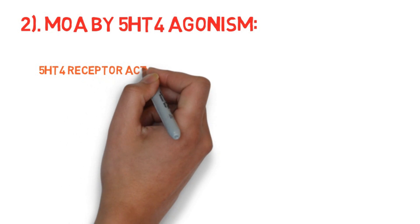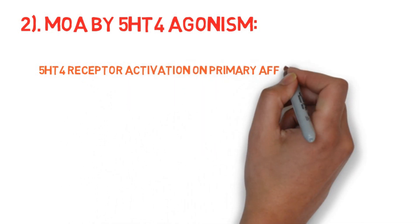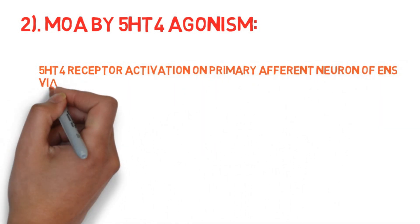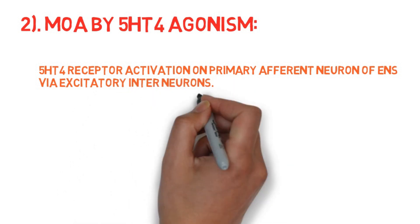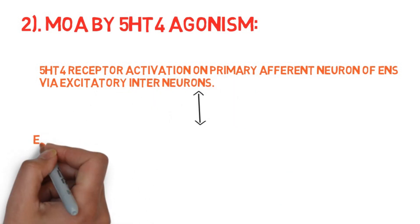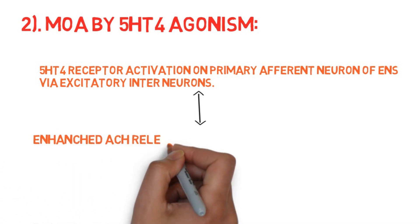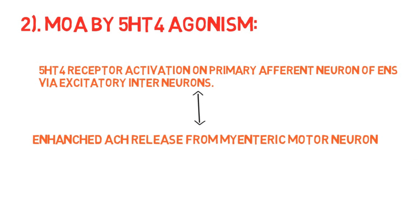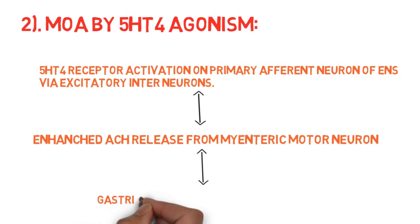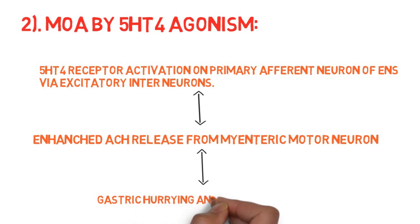Regarding 5-HT4 agonism: activation of 5-HT4 receptors on primary afferent neurons of the enteric nervous system via excitatory interneurons leads to enhanced acetylcholine release from myenteric motor neurons, resulting in gastric emptying and increased lower esophageal sphincter tone.